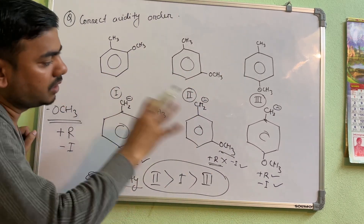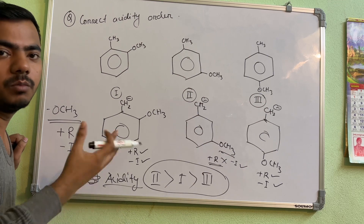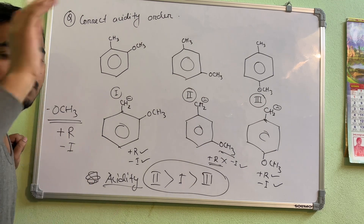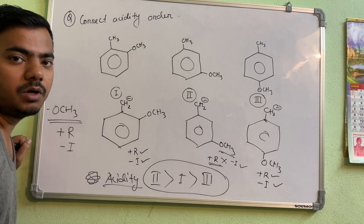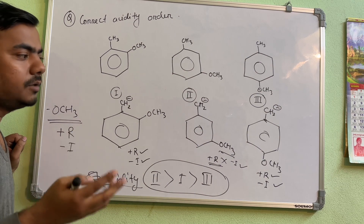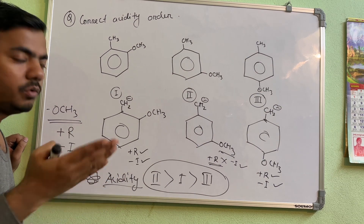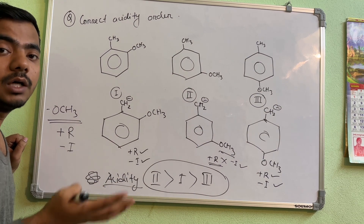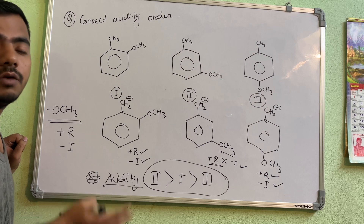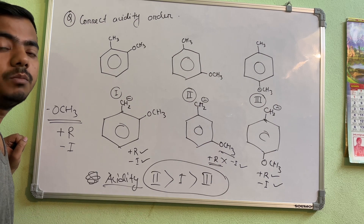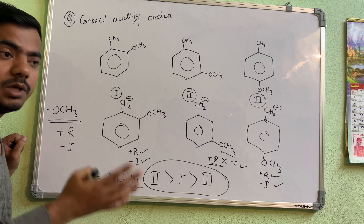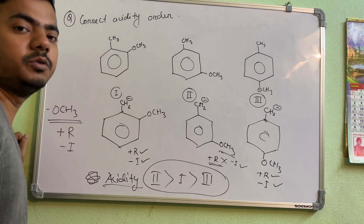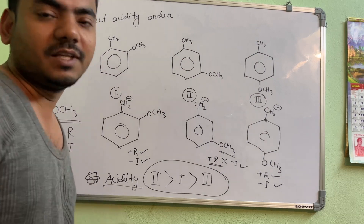So this is your acidity order: the second compound (meta) is the most acidic, then the first compound (ortho), then the third compound (para). I tried my best to explain. You can email me about what type of video you want — organic, inorganic, or physical chemistry — and I will explain that particular topic. Thank you for watching, and kindly share with your friends. Thank you.